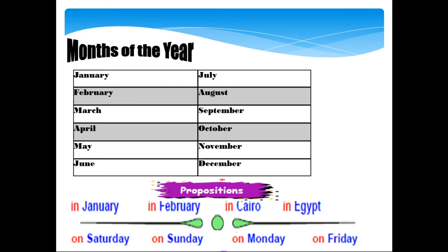January, February, March, April, May, June, July, August, September, November, December. We use the preposition 'in' with months — for example, 'in January.' The preposition to remember is 'in.'